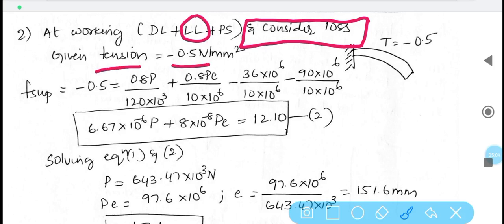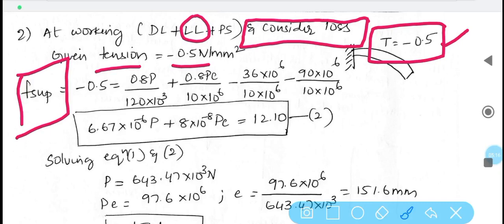Here also the tension is limited and since the tension is acting in the top, F superior expression has to be taken. Substitute everything, include even loss, and these losses have to be multiplied only for the pre-stressing condition, that is P and PE. It has to be considered in such expressions or equation.